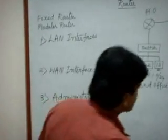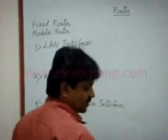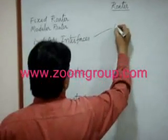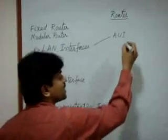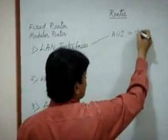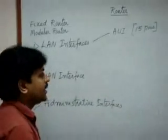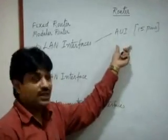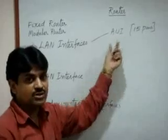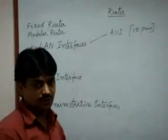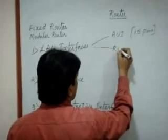The first LAN interface is the AUI — Attachment Unit Interface. The AUI has 15 pins and we can connect a LAN to it. If we want to connect an RJ45 connector with a Cat 5 cable, we cannot directly connect to the AUI, so we need a transceiver. A transceiver is a converter used to connect to the AUI. The other LAN interface is the RJ45 port.